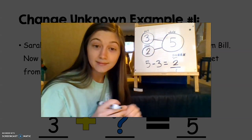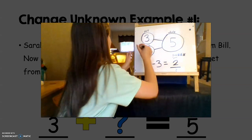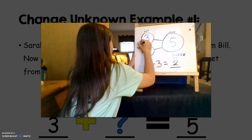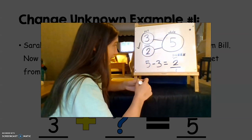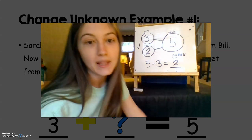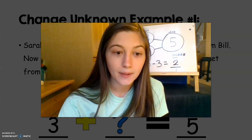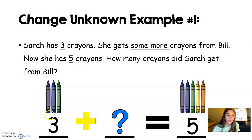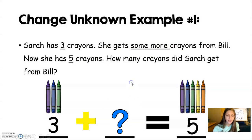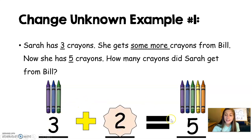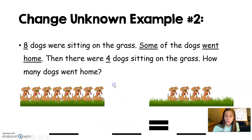Three and two make five — is that correct? Yes, it is. Three plus two equals five. So that was an example of one change unknown problem. Let's go ahead and try another one.